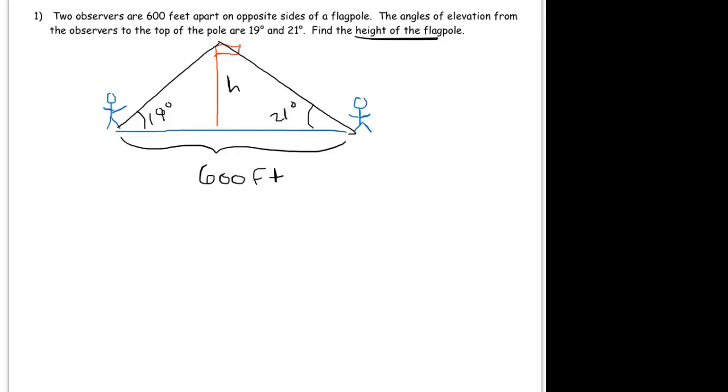So before we jump into this, I just want you to be aware of how easy this problem would be if we knew, for instance, that side of the triangle. So it would be really easy because we could just say, well, the sine, by definition, the sine of 19 degrees is equal to h over c. And of course, if we just knew c, then we all know how to solve that.